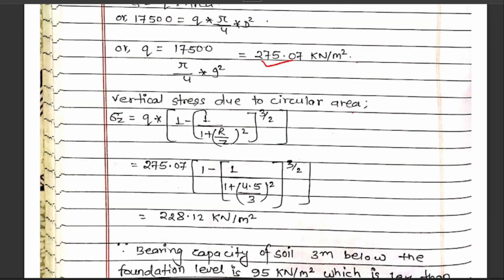Now q is the vertical stress intensity over the circular area. The formula for vertical stress is: σz = q × [1 − 1/(1 + (r/z)²)^(3/2)]. So with q equal to 273.071 kN/m², r = 4.5 m, and z = 3.0 m, the calculated vertical stress σz works out to approximately 228.12 kN per meter square.